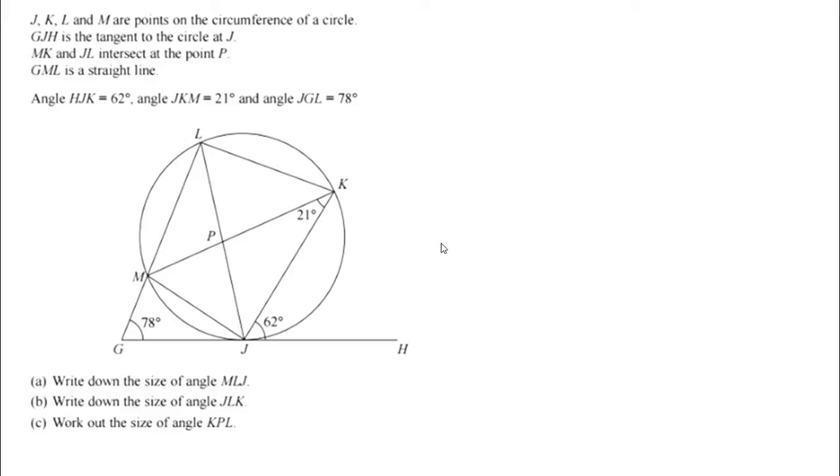So, here we have a quite tricky IGCSE question with a very difficult looking diagram based on the description up here. When we come to the three parts to this question though, fairly straightforward. It just says A, write down the size of angle MLJ, so MLJ, that's this angle up here.